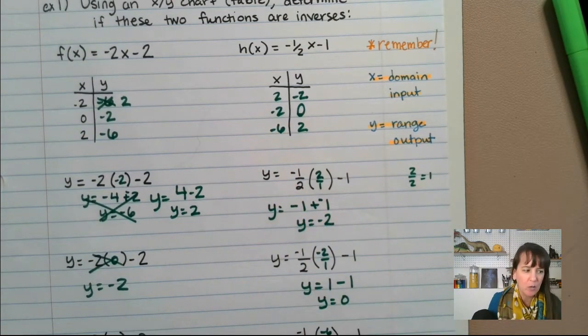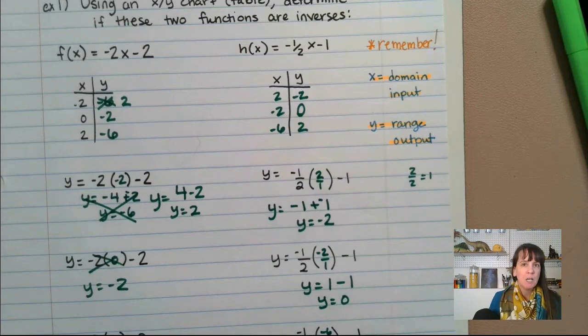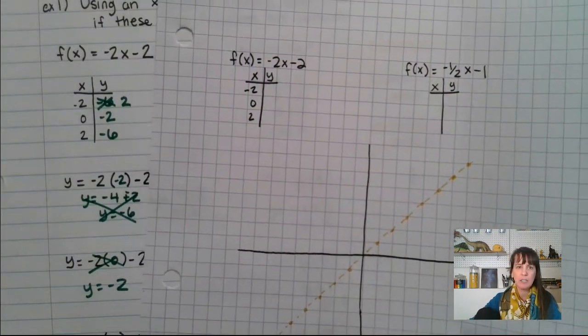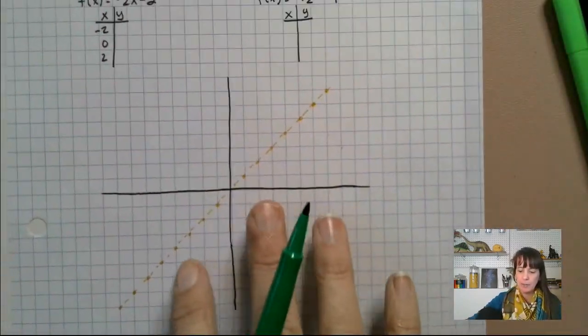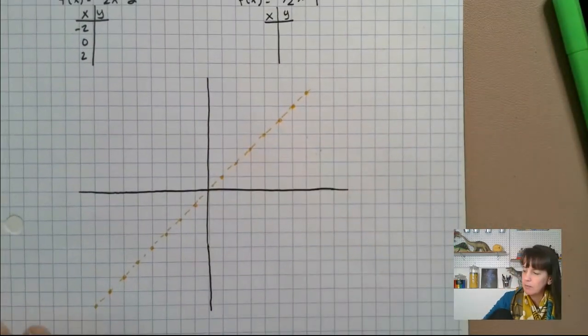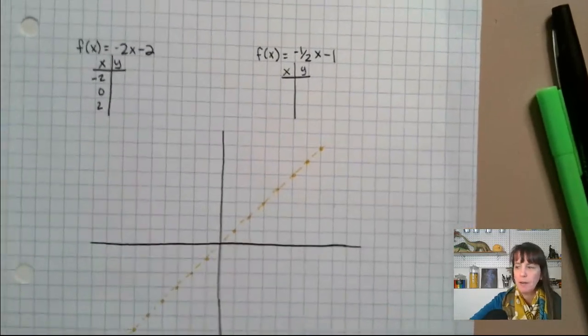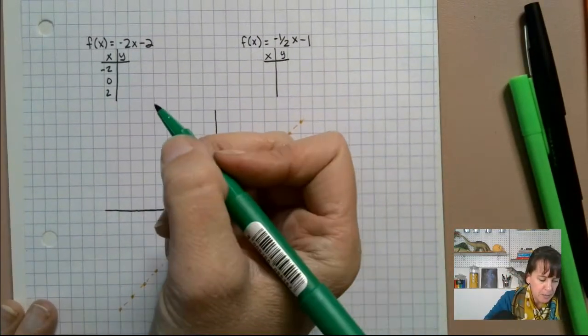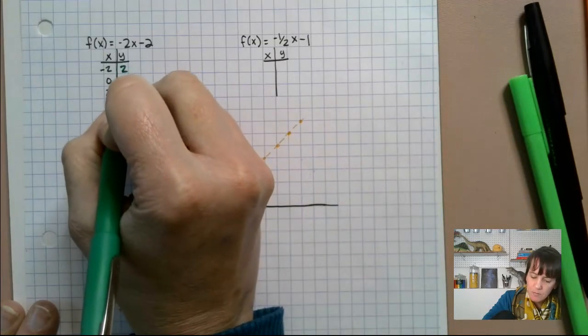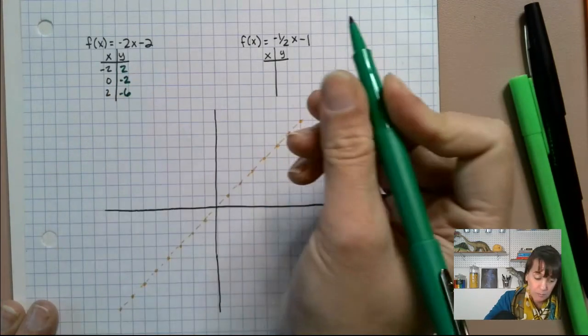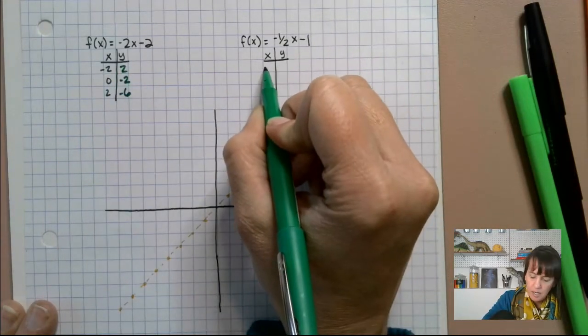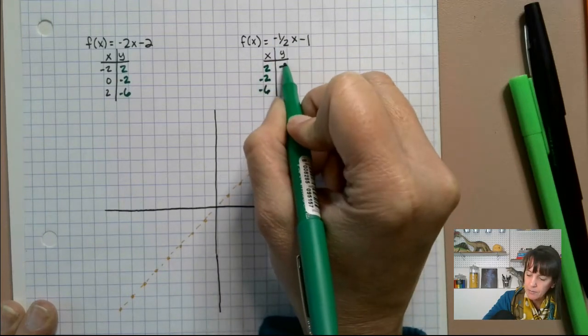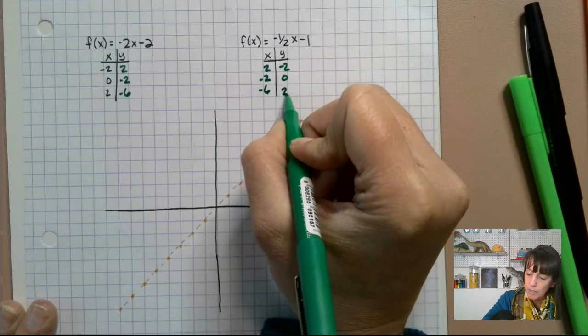What does that mean when we go to graph them? Well, let's take a look at this graph here. And I'm going to take our x, y chart and just copy it down over here. So we have two, negative two, and negative six. I'm making sure I'm copying down right. Two, negative two, negative six. And then we have negative two, zero, two. We got to graph these guys, right?